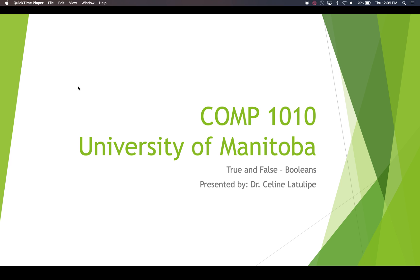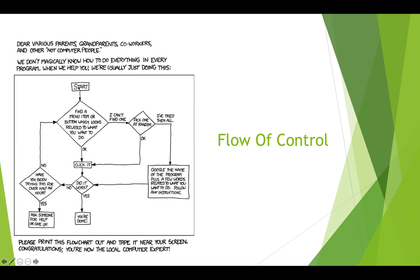You've probably seen flowcharts before, and this flowchart is kind of a funny joke flowchart about giving tech support to your family. We start here and then we have a diamond, which is a decision box. Someone is asking you for help — find a menu item or button which looks relevant to what you want to do, and then you make a choice: you click it, or the other choice is 'I can't find one,' and so you have to do something else.